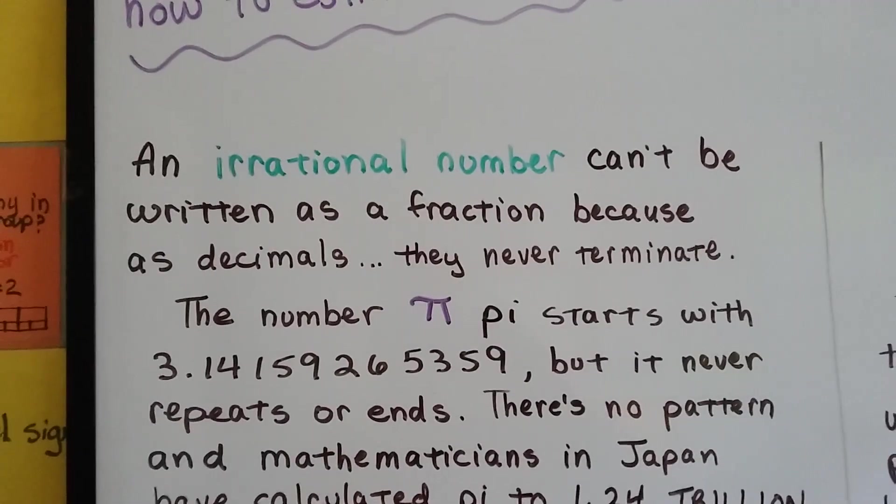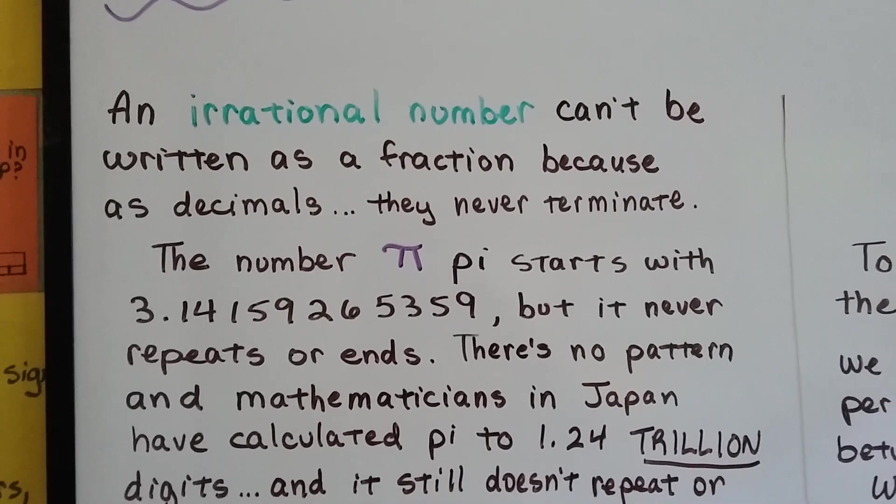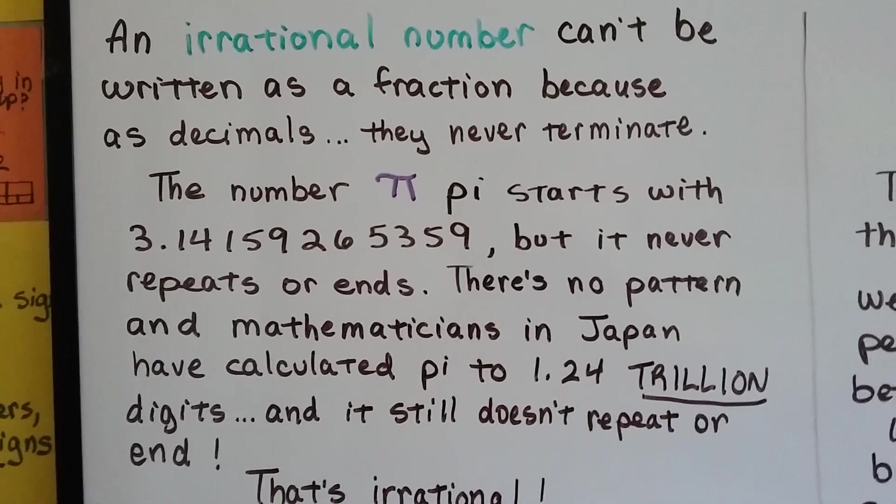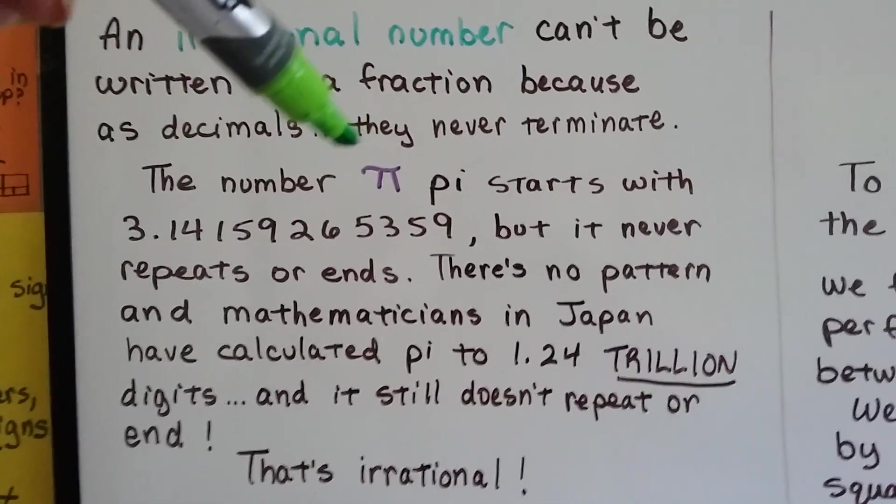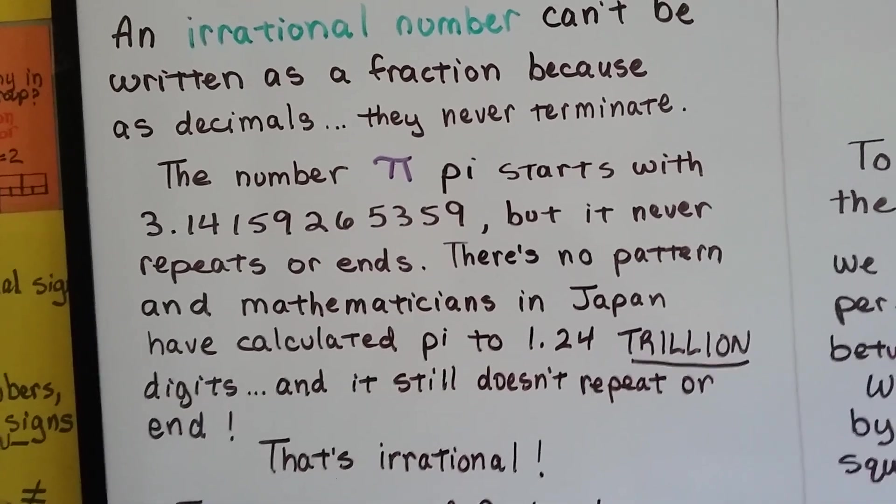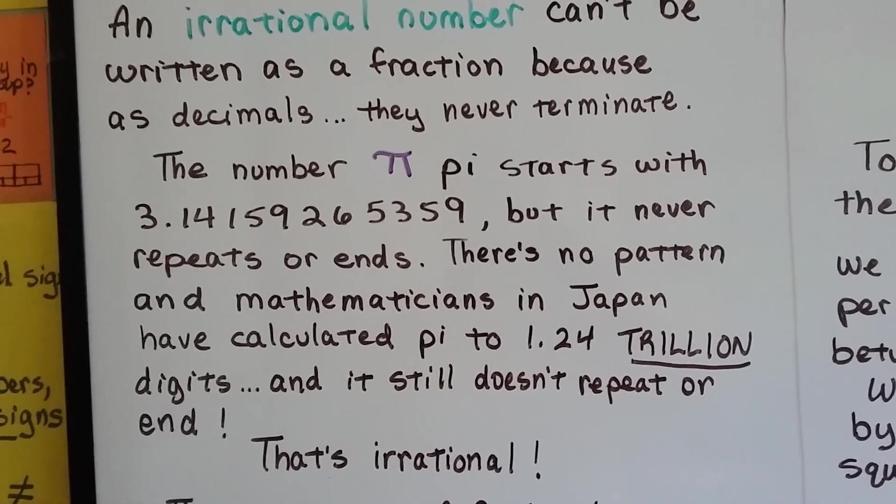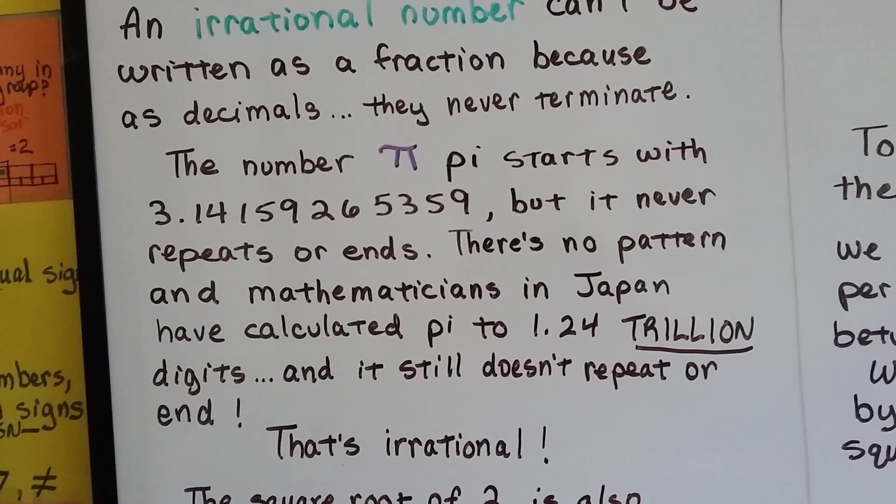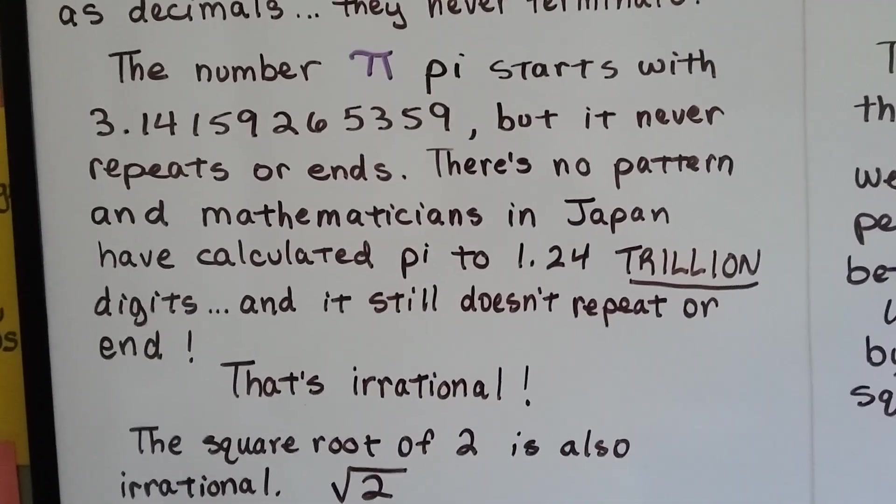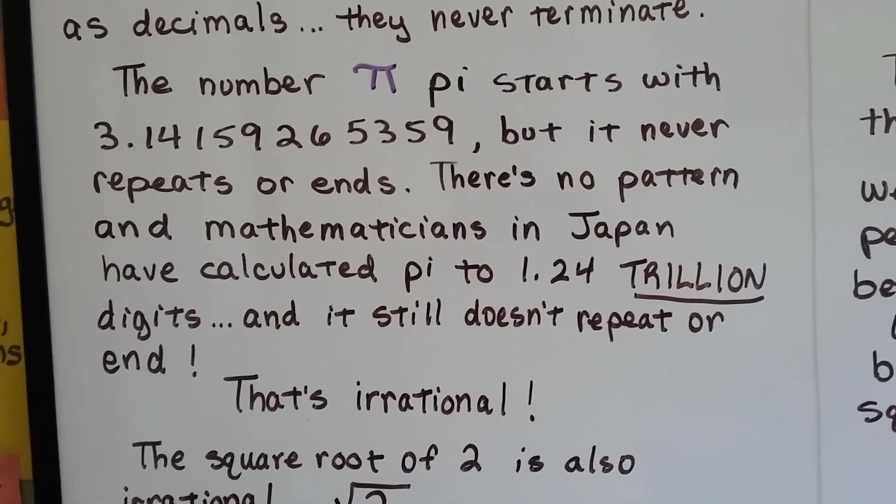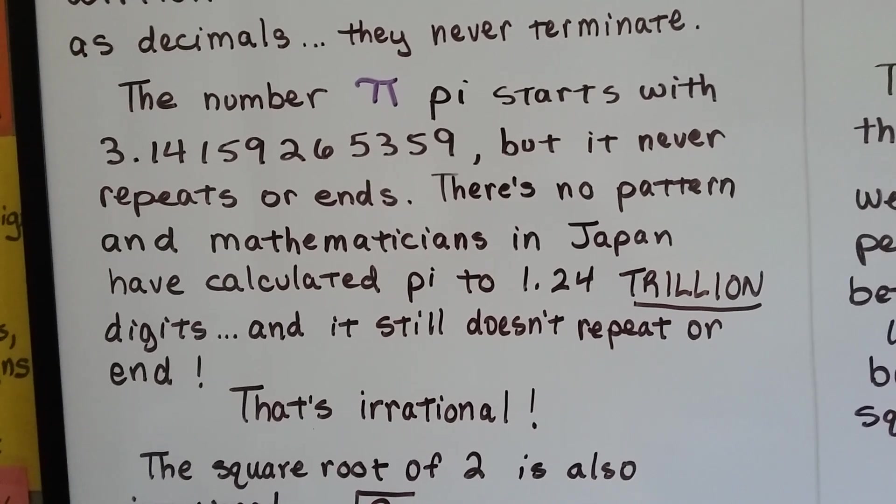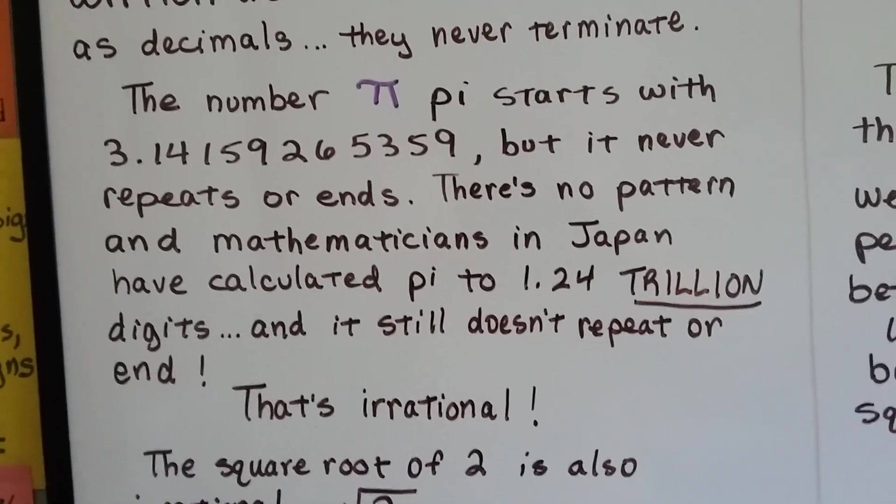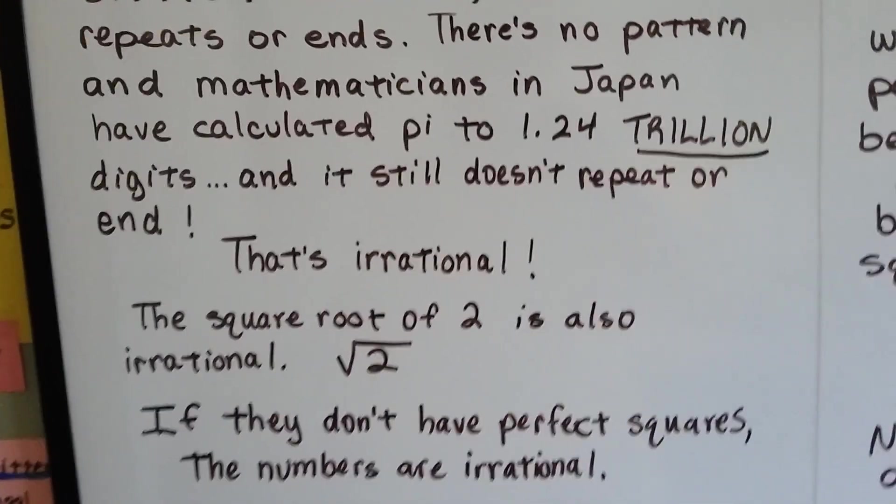An irrational number can't be written as a fraction because as decimals they never terminate - they never end. The number pi, that's the symbol for pi, starts with 3.14159265359 and it goes on and on. It never repeats or ends and there's no pattern. Mathematicians in Japan have calculated pi to 1.24 trillion digits and it still doesn't repeat or end. That's irrational.